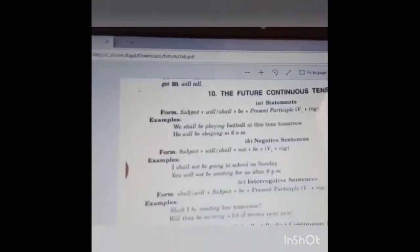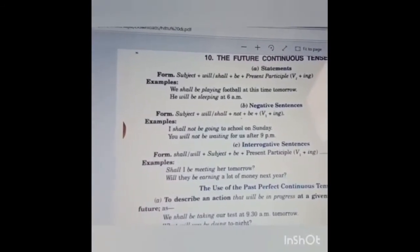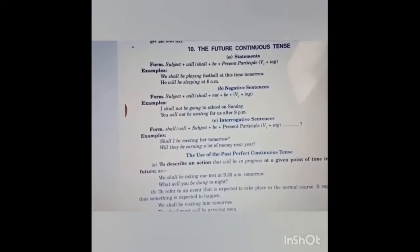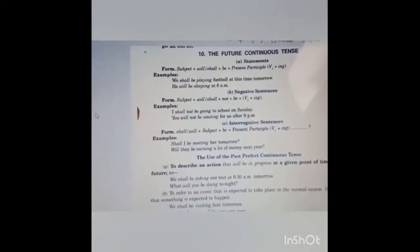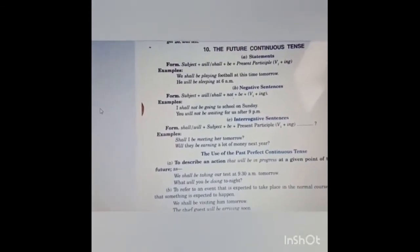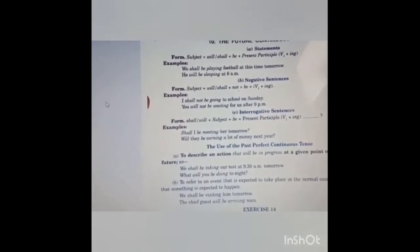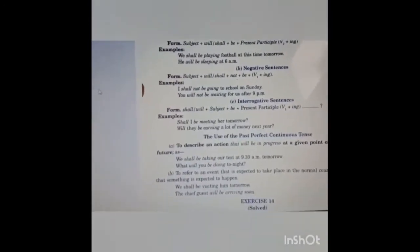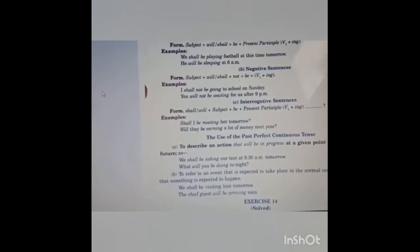Now comes the future continuous tense. Form is subject plus will/shall plus be plus present participle — that is verb's first form plus ing. Example: we shall be playing football at this time tomorrow; he will be sleeping at 6 a.m. For negative sentences: subject plus will/shall plus not plus be plus verb's first form plus ing. Example: I shall not be going to school on Sunday; we will not be waiting after 9 p.m.